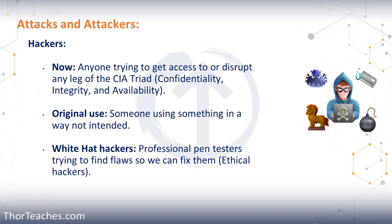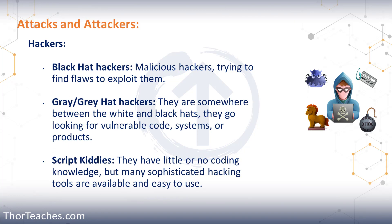White hat hackers are ethical hackers trying to find flaws so we can protect our systems. On the other side of the spectrum, black hats are also trying to find flaws, but for entirely different reasons — they are the attackers. In the middle there's a spectrum of gray hat hackers who find flaws but won't exploit them; they'll either tell the company to fix it, threaten to publish it, or just publish it.